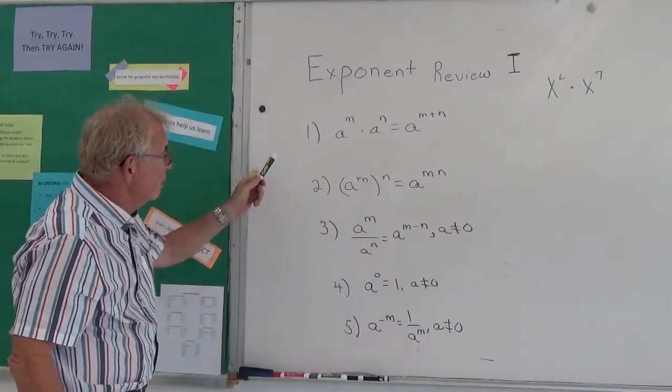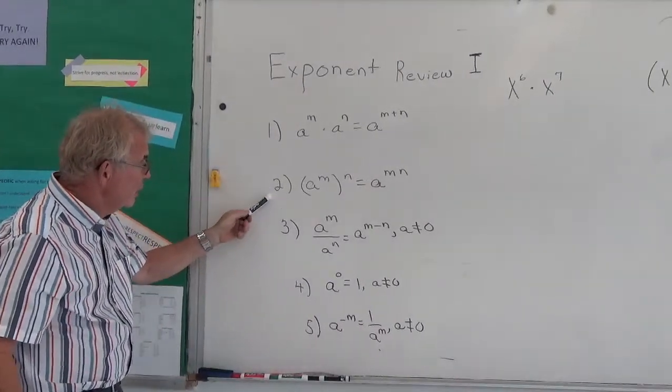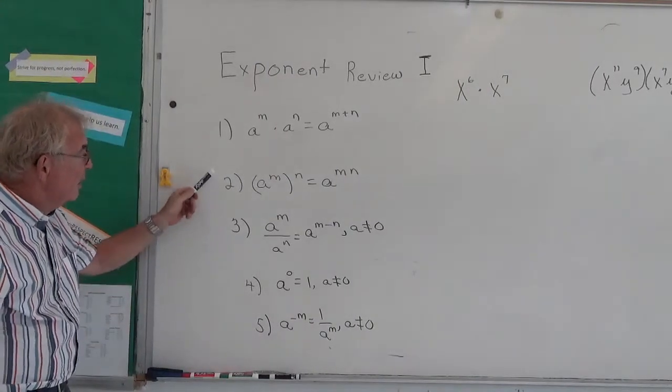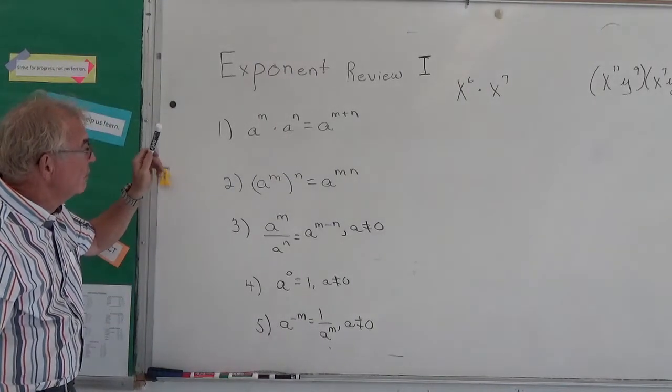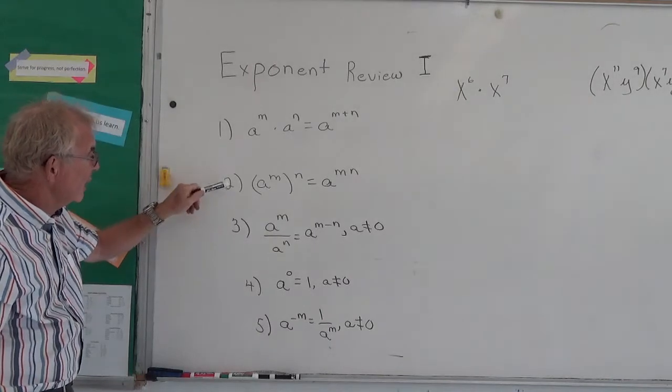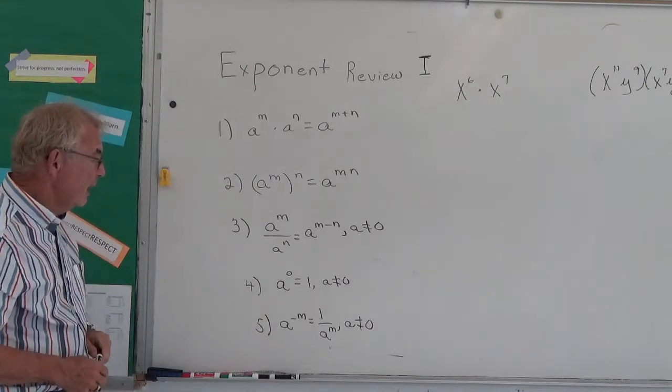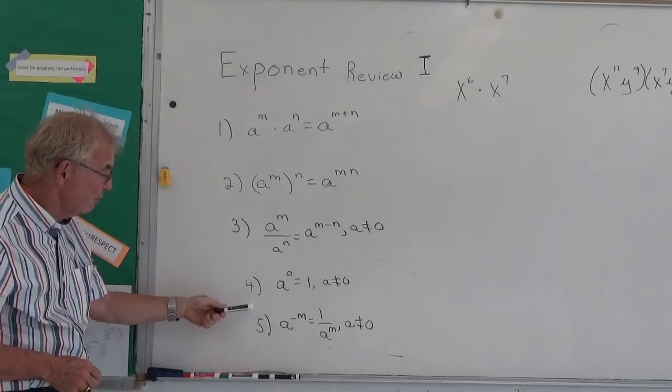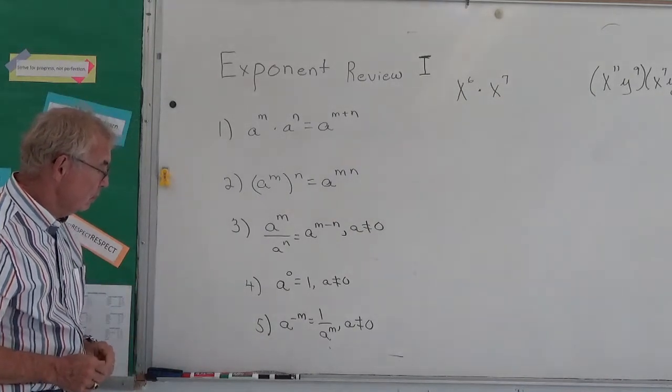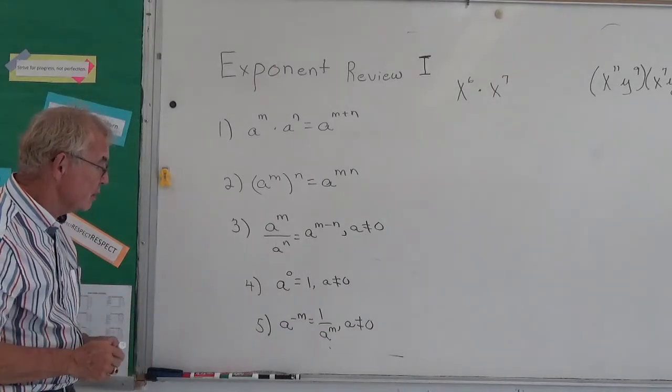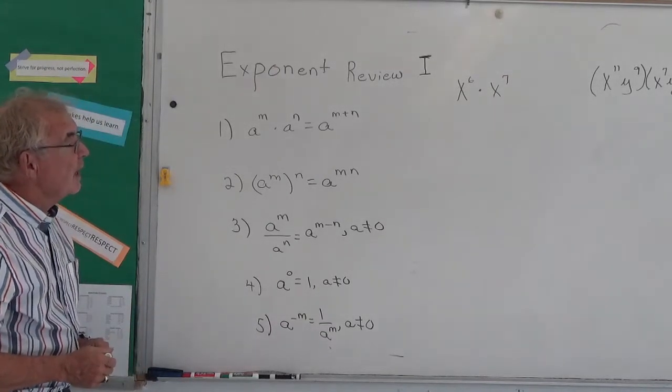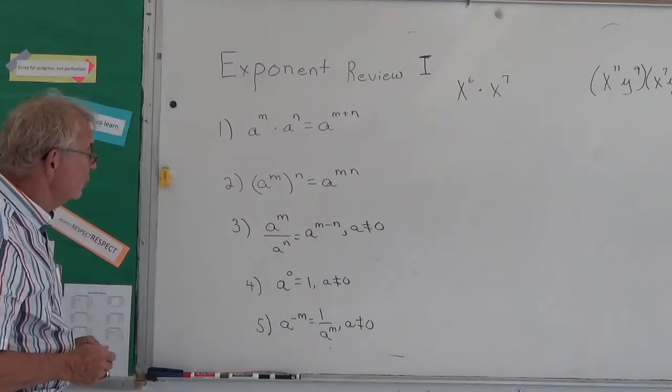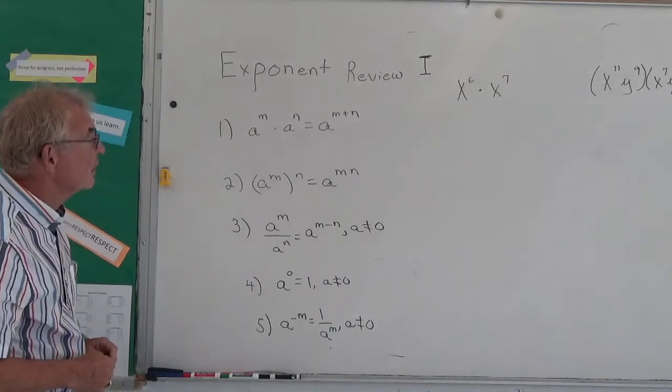But here's the five laws that we derived last time on the exponent review derivation. Today we're going to use in review one the first, second, and third law. And then following that will be exponent review two, where we will do the fourth and fifth rule, and then accumulation of all five rules. So what I have is a few examples of rule one, two, and three. So let's look at the first one.